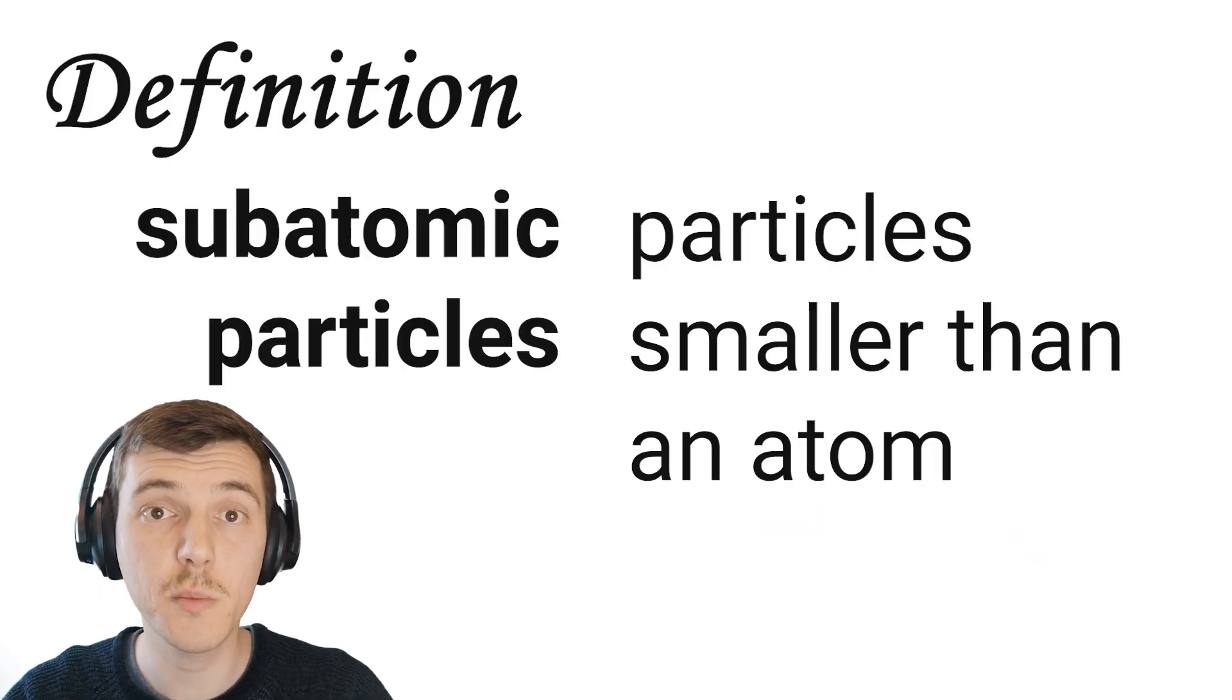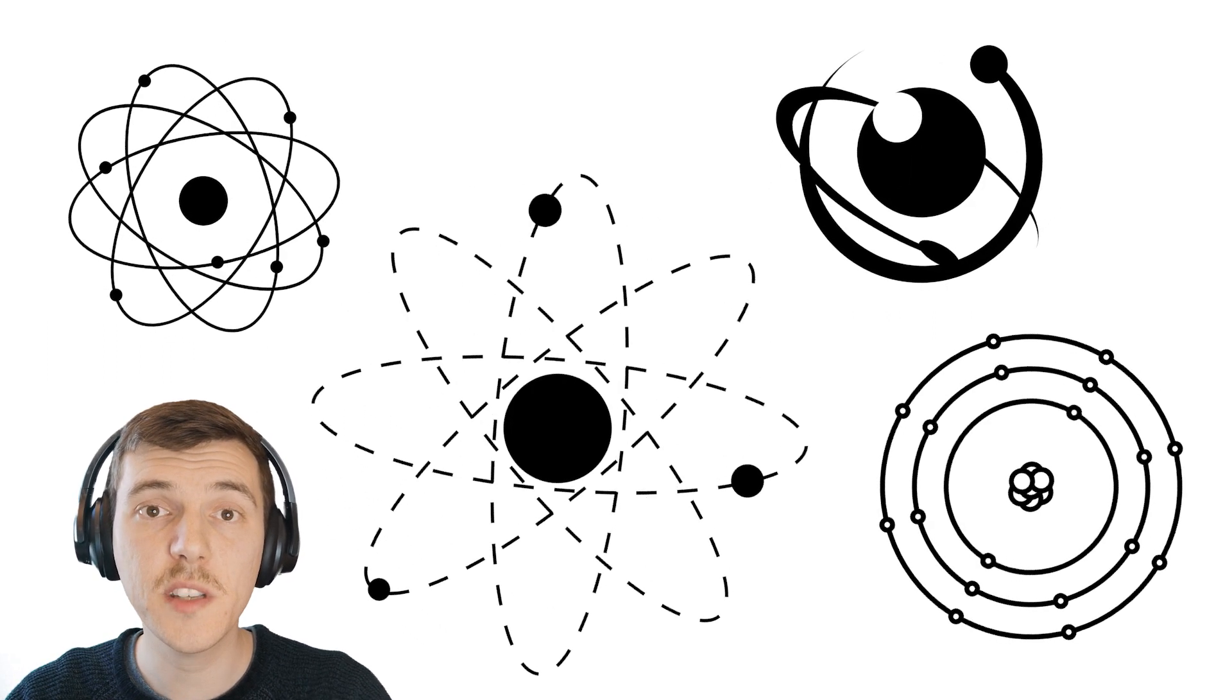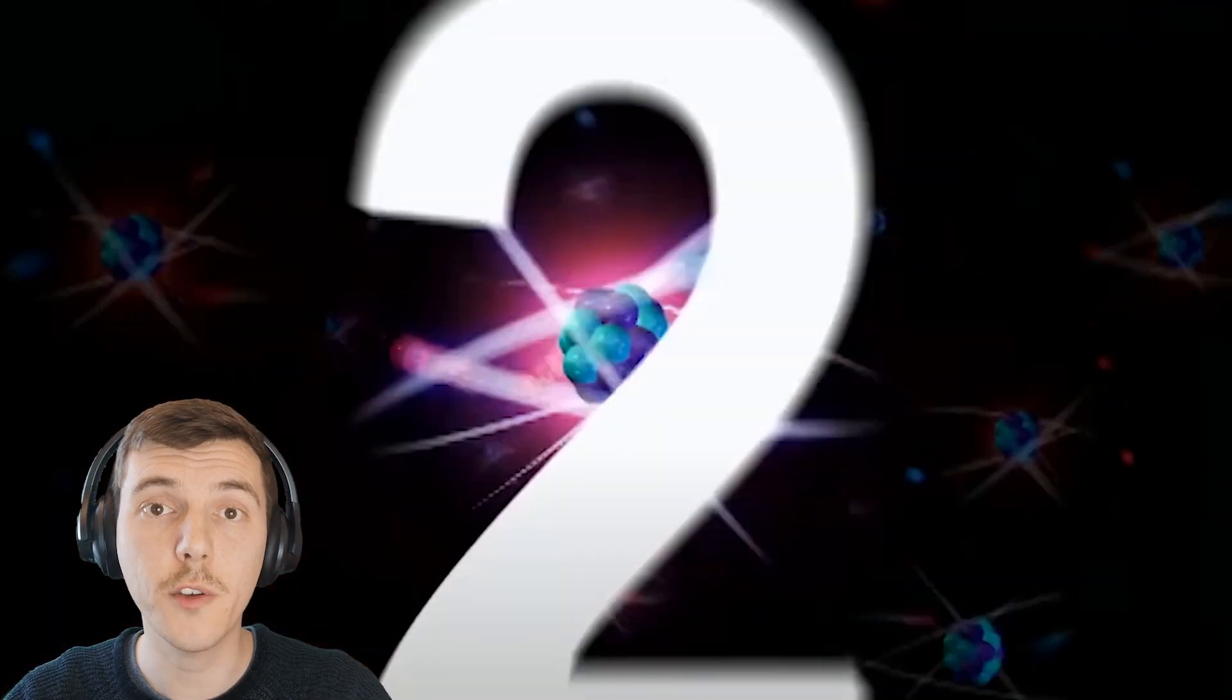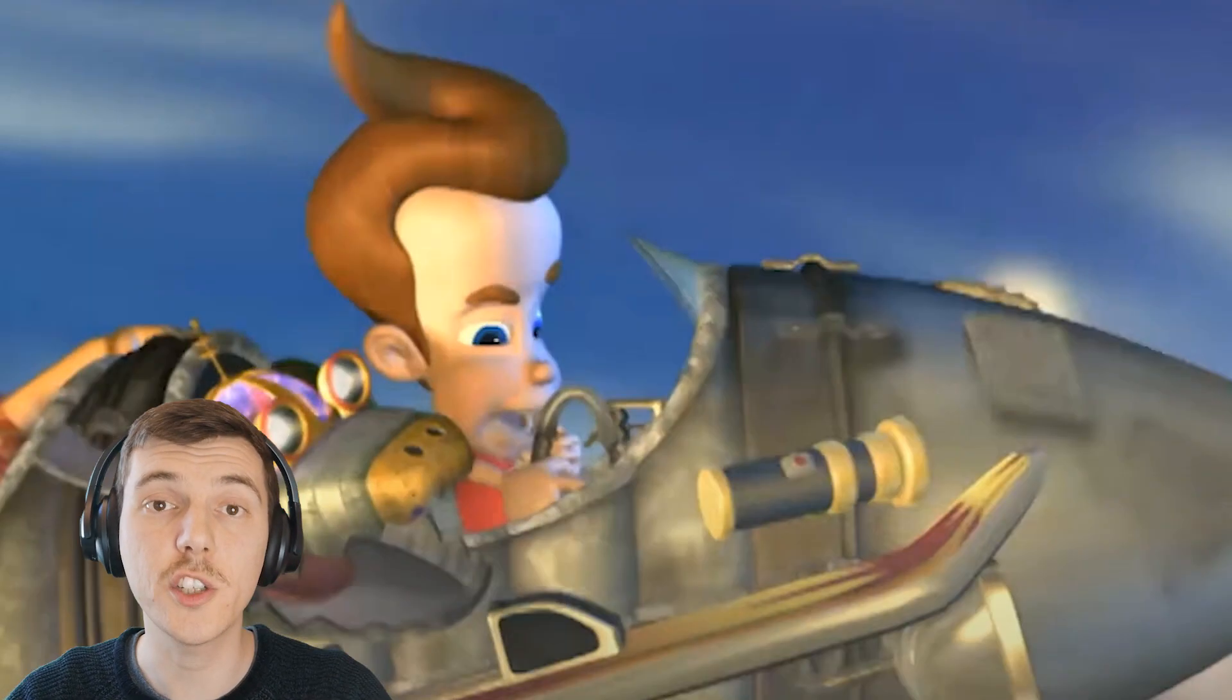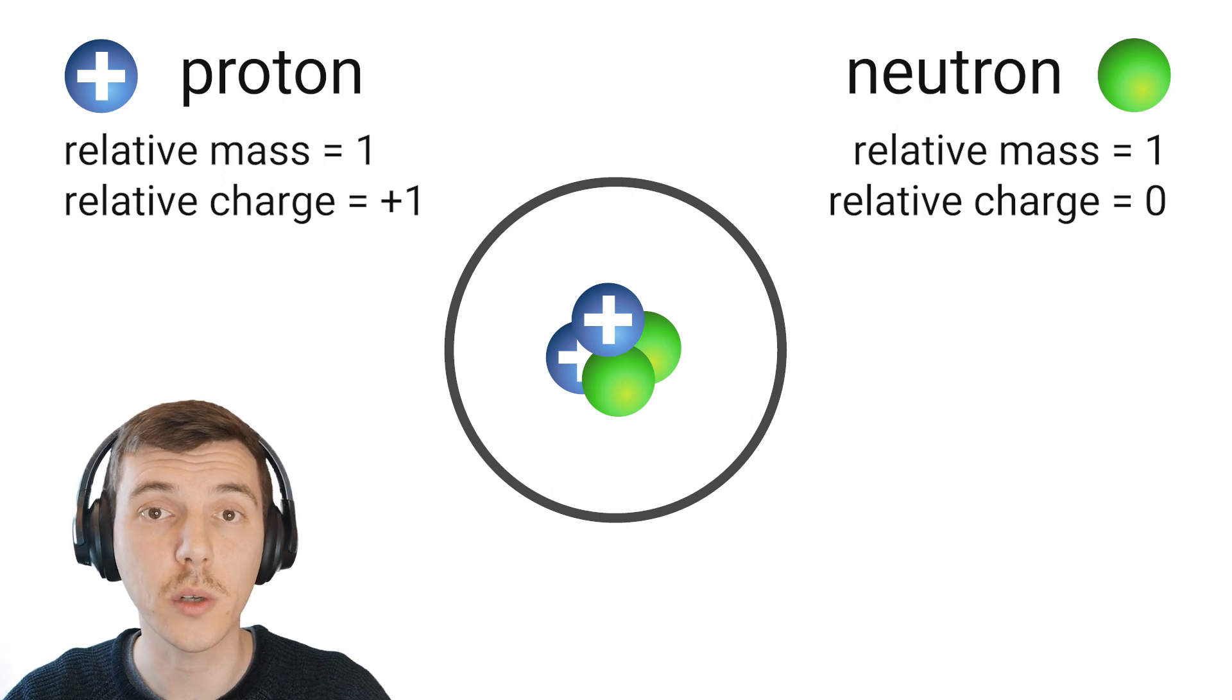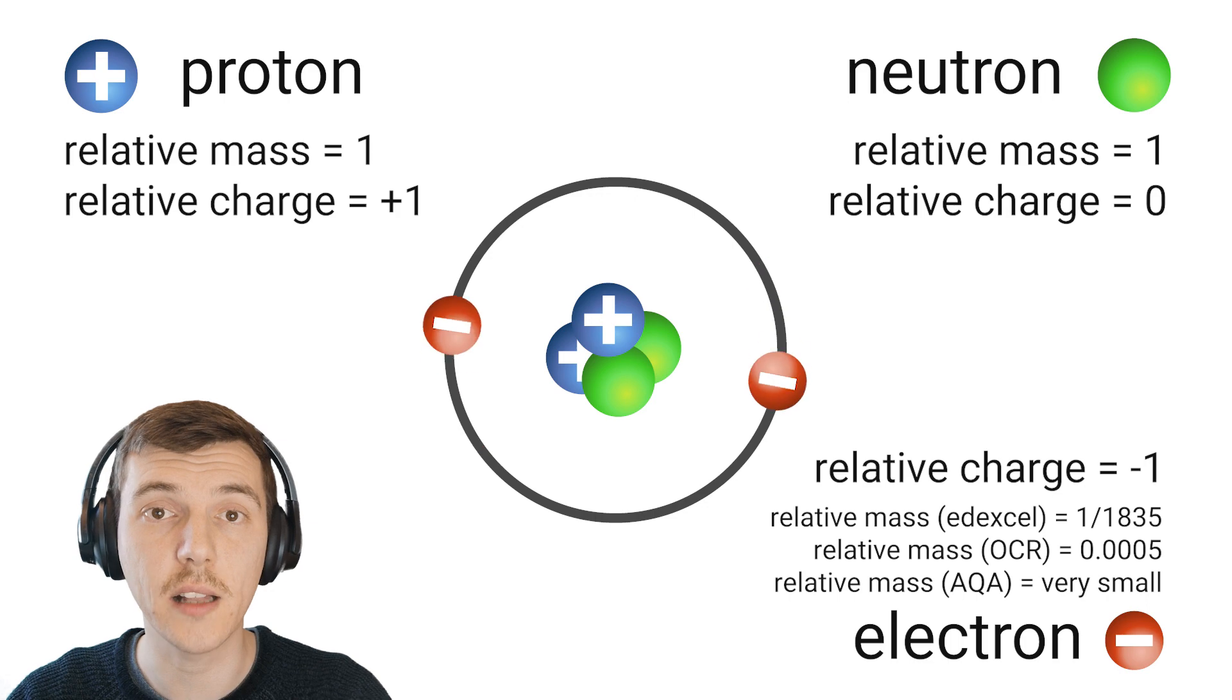Inside atoms, there are smaller particles called subatomic particles. These include protons, neutrons, and electrons. Atoms have been represented in lots of different forms over the years. You've probably seen quite a few of these in popular culture, in TV shows and movies. But there is a preferred way to draw atoms, and that's as a circle with protons and neutrons in the centre, which we call the nucleus, and electrons around the outside in levels called shells.